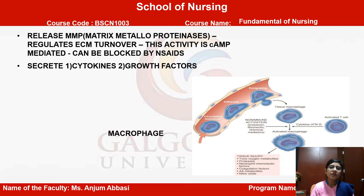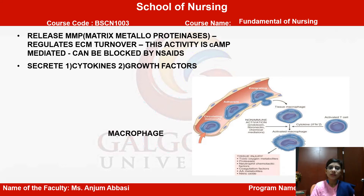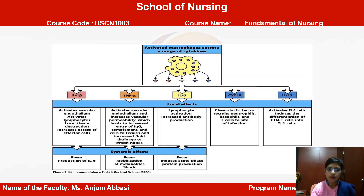There is a release of MMP, which is matrix metalloproteinases, and it regulates ECM turnover. This activity is cAMP mediated and can be blocked by NSAIDs. Secretion of cytokines and growth factors can be explored in this slide.